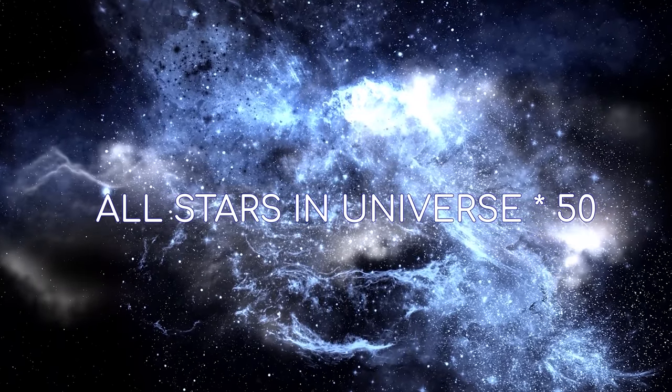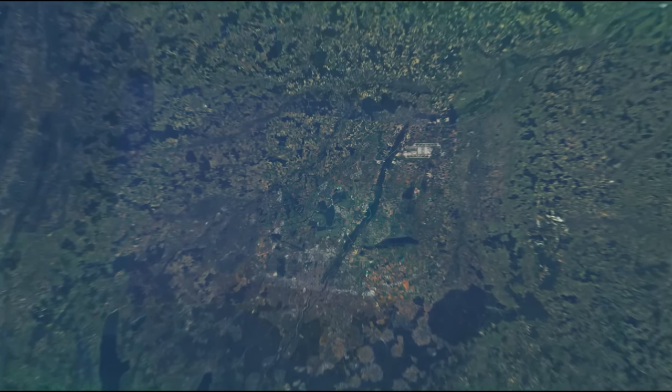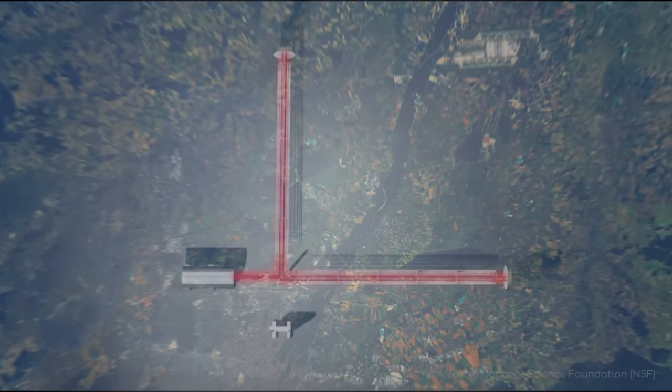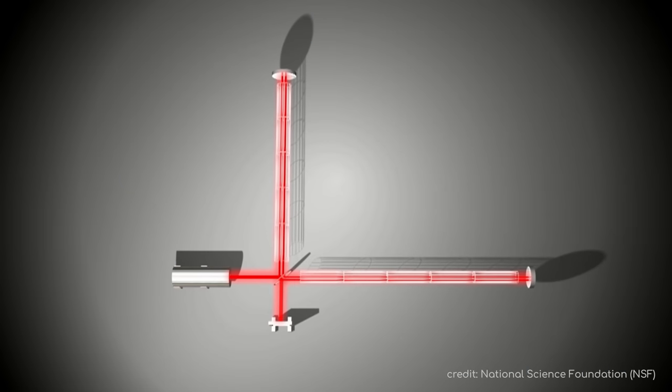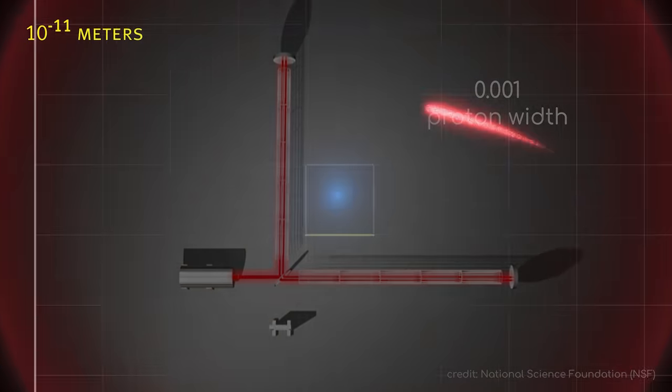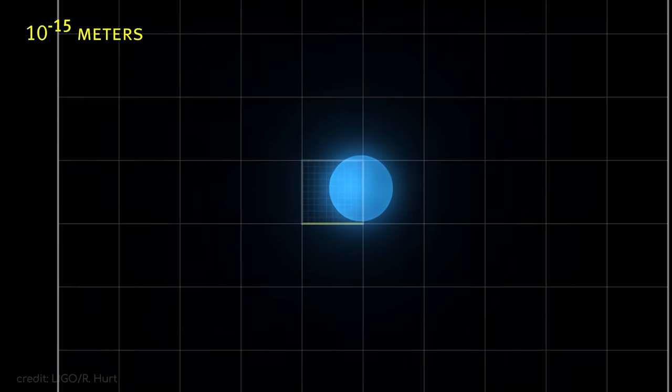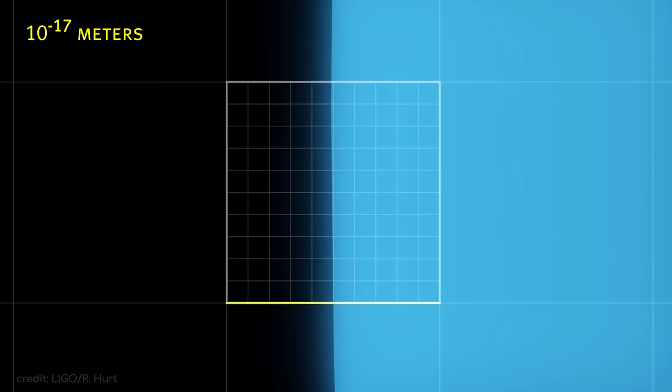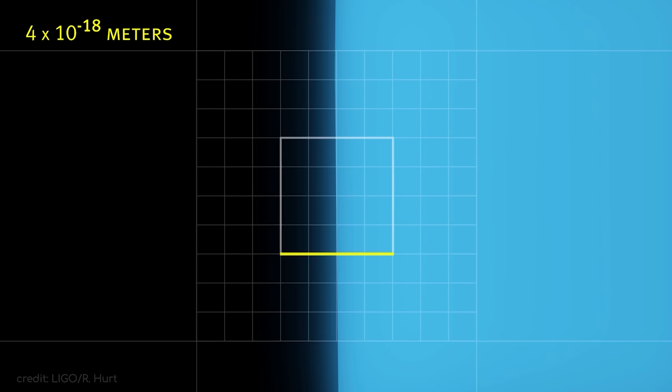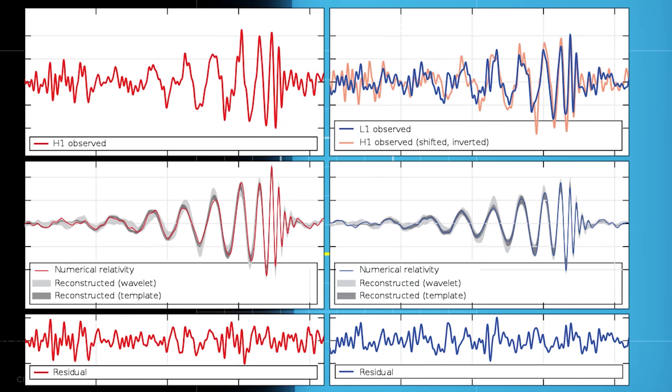Yet, after traveling for 1.6 billion years and finally reaching LIGO, the disturbance was so faint, it moved LIGO's 4km arm 1,000th of the width of a proton. To visualize this, imagine the distance between us and Proxima Centauri, and changing it the width of a human hair. That is the level of precision LIGO was able to detect. If that's not one of the most astonishing feats in human history, I don't know what is.